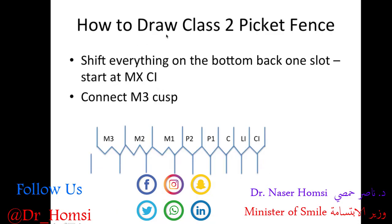You'll get some questions on Angle's Class II occlusion, and this is not too bad if you've drawn the picket fence — all you have to do is shift everything on the bottom back one slot. Start on the maxillary central incisor, draw a line down, and continue across until you connect the third molar. That gives you an easy template for Class II occlusion. I go through a typical Class II question at the end of the lecture.